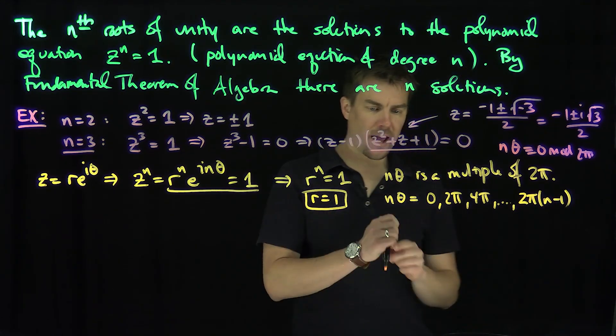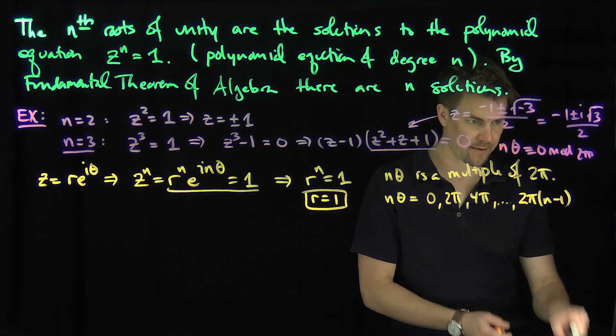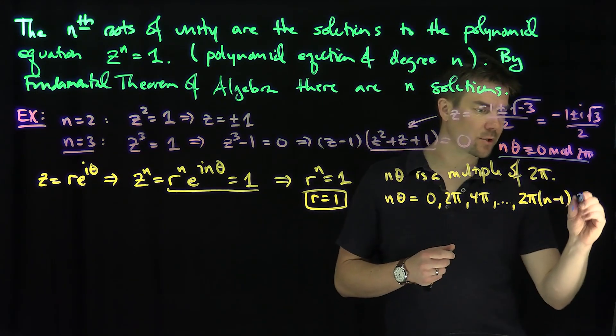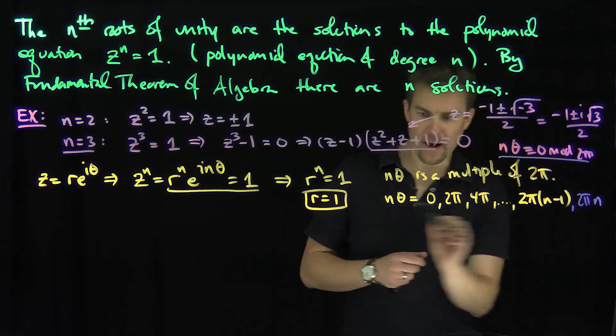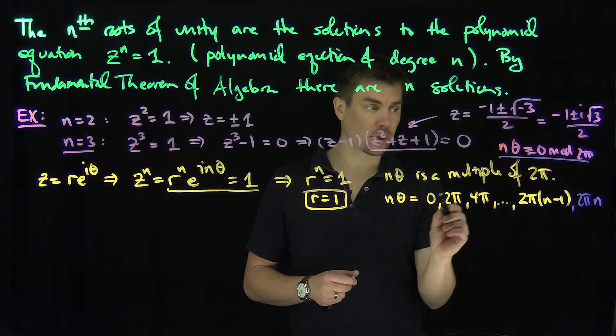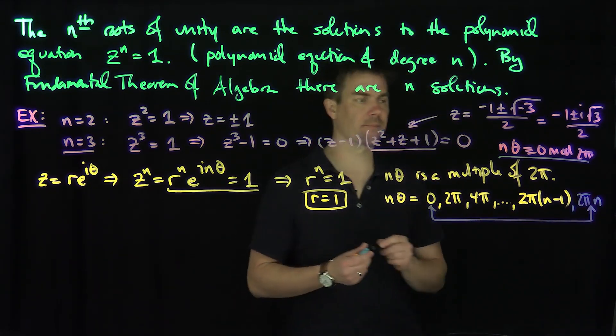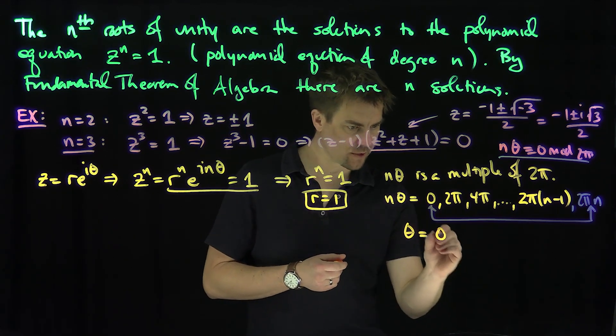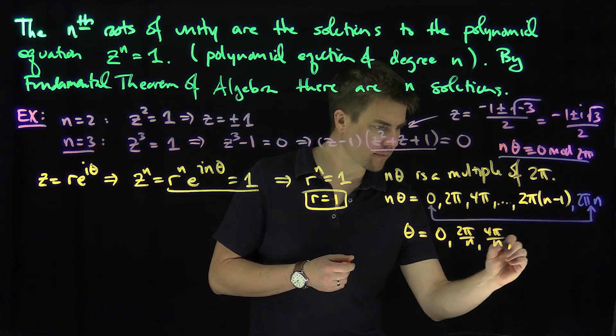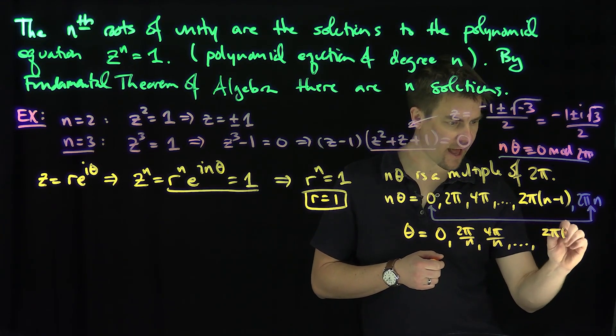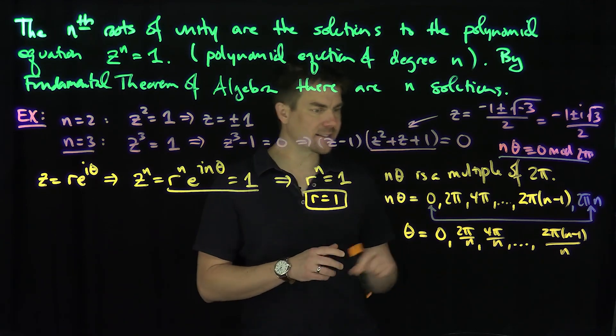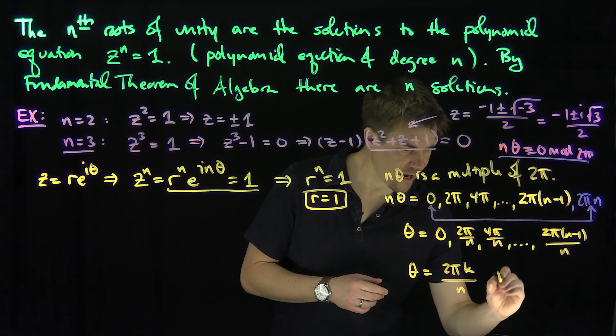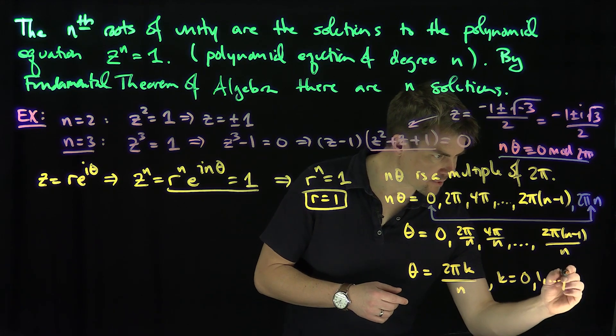The reason we don't do n is that if we went up to 2 pi times n, theta would be equal to 2 pi, and that's the same thing as 0. In other words, it starts to cycle back when we get to this point. So I go from 0 up to n minus 1, so that gives me the values of theta. So theta is equal to 0, or 2 pi over n, or 4 pi over n, all the way down to 2 pi n minus 1 over n. We can parameterize this as theta equals 2 pi k over n, where k ranges from 0, 1, all the way up to n minus 1.